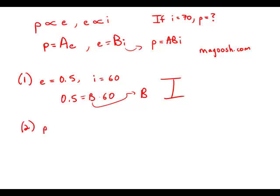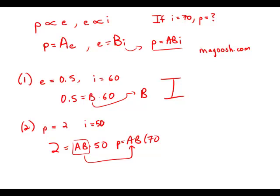Statement number two tells us that when P equals 2, I equals 50. Well, then we can go directly to this equation, 2 equals AB times 50. Well, that will allow us to solve for the product AB. And once we know that product AB, then all we'd have to do is plug in 70. And we'd know what P was. We'd know the production index. So this statement by itself would allow us to solve for the numerical value of the production index. So this statement by itself is sufficient.